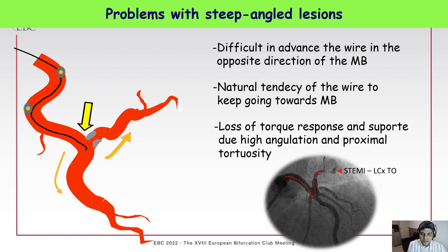These are the common problems that we find in situations of steep angulated side branches. It's difficult to advance the wire in the opposite direction of the main branch, because of the natural tendency of the wire to keep going towards the main branch. As we have more tortuosity and calcification, we have loss of torque response and loss of support due to high angulation and proximal tortuosity, so the wires do not respond well.